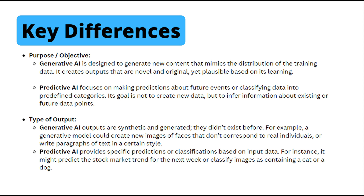As for types of output, generative AI outputs are synthetic and generated — they didn't exist before. For example, a generative model could create new images of faces that don't correspond to real individuals, or write paragraphs of text in a certain style. Many of you are familiar with using ChatGPT, where you can enter a prompt and receive human-like interaction back. Predictive AI's output provides specific predictions or classifications based on the input data. For instance, it might predict the stock market trend for the next week, or classify images containing a cat or a dog.